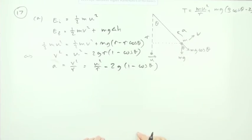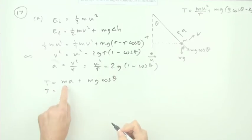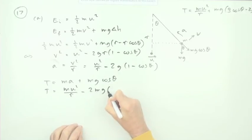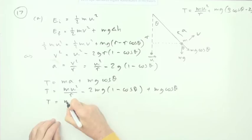I can put the two parts together to get the tension. The tension has to provide two things: it's got to provide the force for the centripetal acceleration, so ma, and it's got to support that component of the weight, plus mg cos theta. So the tension is going to be given by mass times all of this. That will be mu squared upon r minus 2mg times 1 minus cos theta plus another mg cos theta.